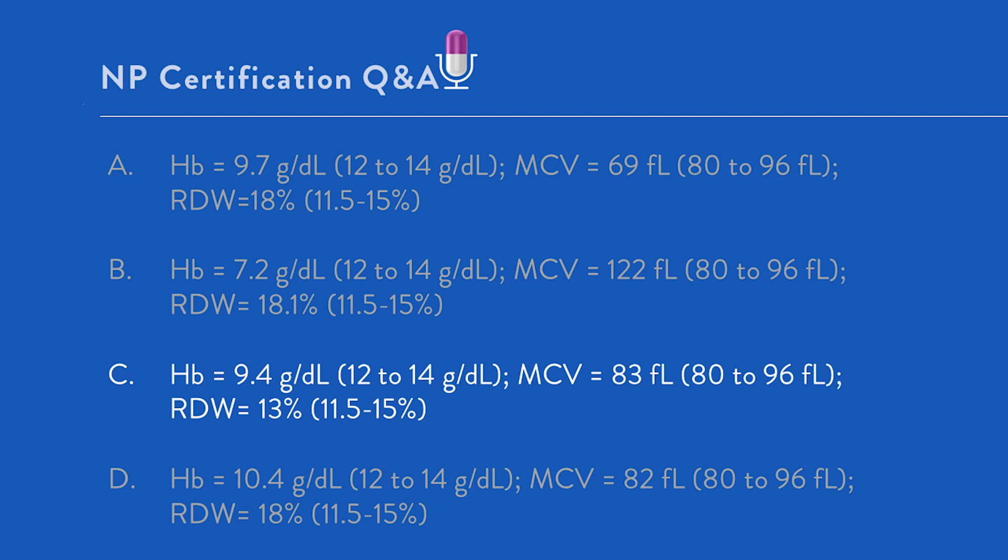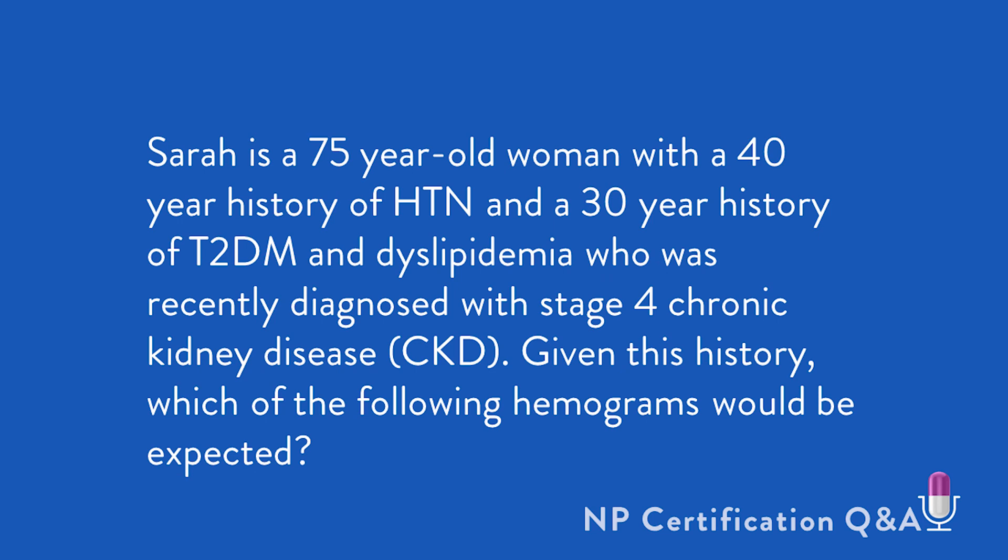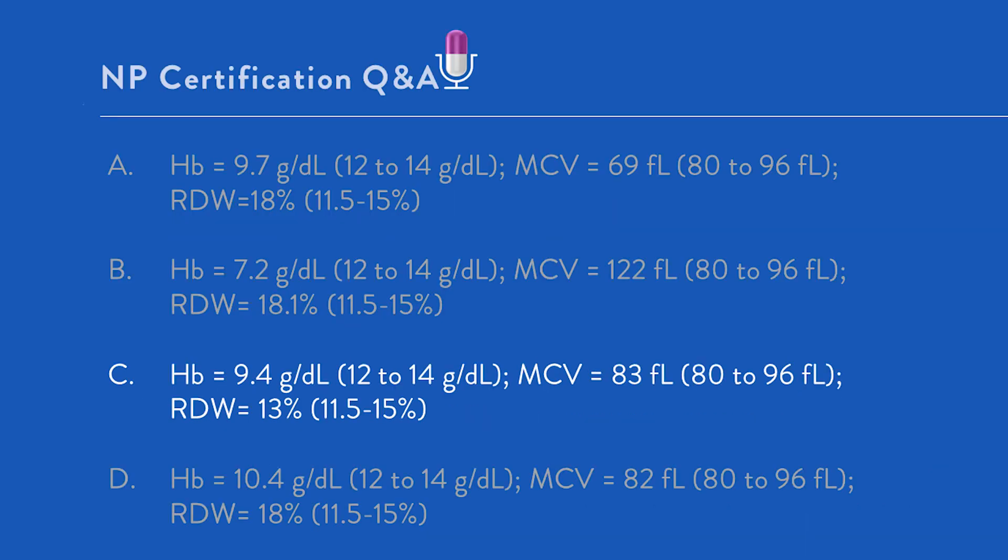But to answer that correctly, you need to know that anemia is commonly correlated with advanced CKD. So let's go back and take a look at the question and go through the answer options provided. Sarah is a 75-year-old woman with a 40-year history of hypertension, a 30-year history of type 2 diabetes and dyslipidemia, who is recently diagnosed with stage 4 CKD. Given this history, which of the following hemograms would be expected? Option A: hemoglobin of 9.7, MCV of 69, so microcytic, RDW 18%, telling us the new red blood cells are likely smaller and paler than the existing red blood cells. This is incorrect.